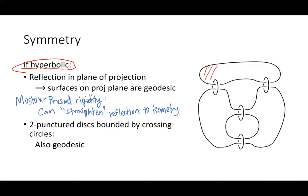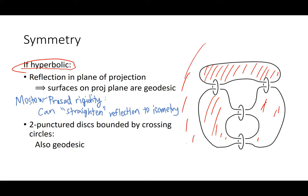The first thing to notice is that these links have a symmetry: there's a reflection in the plane of projection that takes the link back to itself. If this link happens to be hyperbolic, then that reflection implies all surfaces on the projection plane will be totally geodesic. For example, the twice-punctured disc bounded by a crossing circle will be totally geodesic. This follows from basic hyperbolic geometry calculations — there's a paper by Adams from the 1980s that proves that.